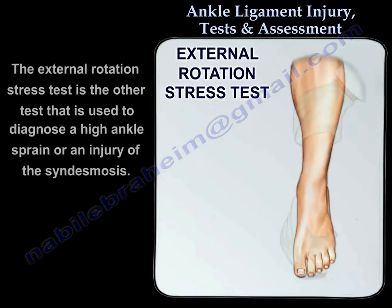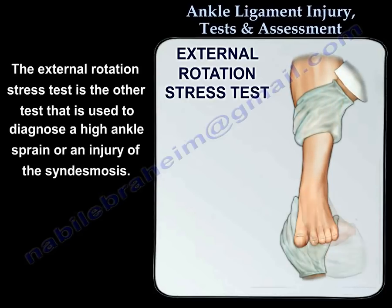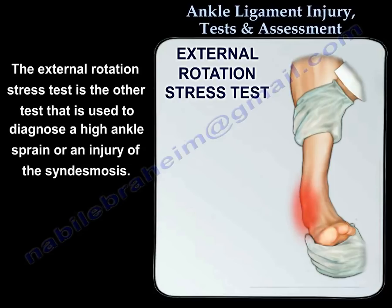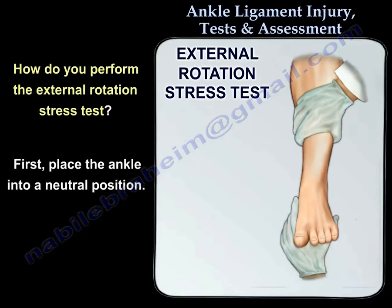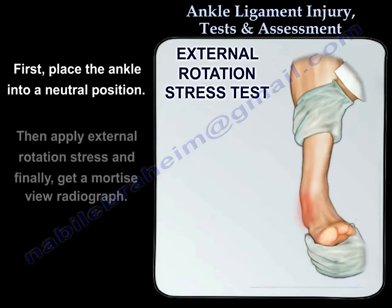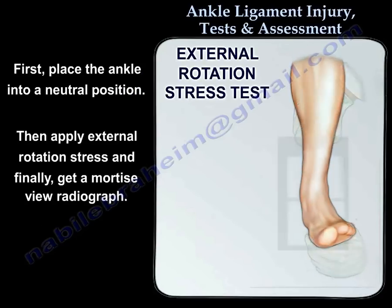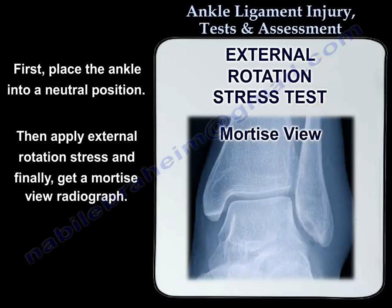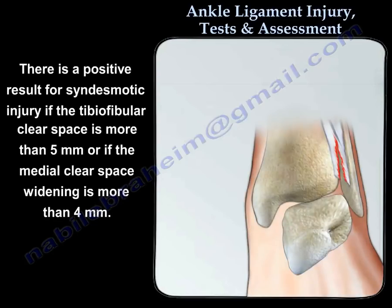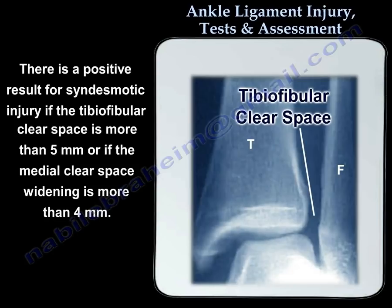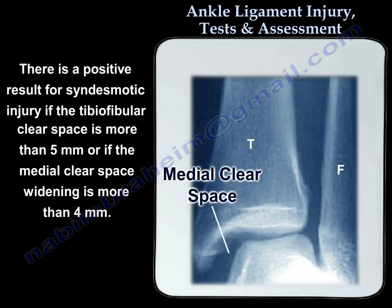The external rotation stress test is the other test used to diagnose high ankle sprain or injury of the syndesmosis. To perform the test, first place the ankle into a neutral position, apply external rotation stress, and then get a mortise view radiograph. There is a positive result for syndesmosis injury if the tibiofibular clear space is more than 5 mm or if the medial clear space widening is more than 4 mm.